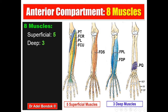The five superficial muscles are, from lateral to medial: pronator teres, then flexor carpi radialis, then palmaris longus, then flexor carpi ulnaris, and flexor digitorum superficialis. Actually, the flexor digitorum superficialis is deep to the other four muscles. So the first layer is pronator teres, flexor carpi radialis, palmaris longus, flexor carpi ulnaris, and the second layer is flexor digitorum superficialis.